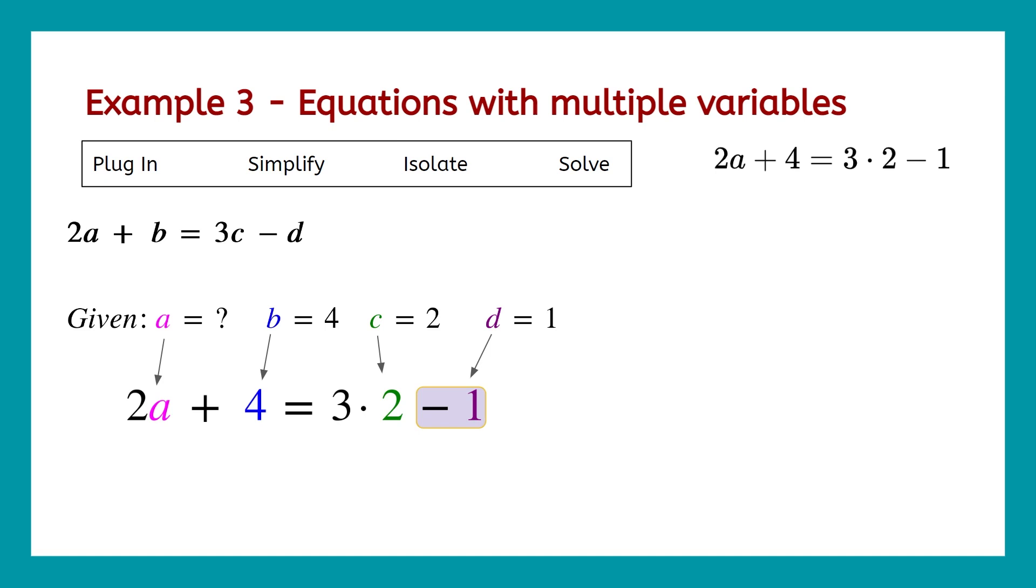So we get 2a plus 4 equals 3 times 2 minus 1. And now we start to simplify. 3 times 2 is 6, minus 1 is 5. So we get 2a plus 4 equals 5. So now we've plugged things in, and we've simplified them. Next we got to isolate. How are we going to isolate this? Two things are happening there. We're adding 4, and we're multiplying by 2. We want to get rid of the thing that's being added or subtracted first. So I'm going to get rid of the 4. It's being added right now, so I have to subtract it. That means when I subtract 4 from both sides, I'll get 2a equals 1. Now, how do I get a by itself? a is currently being multiplied by 2, so I need to divide both sides by 2. So I get a equals 1 half. And now I can go ahead and reduce that to a decimal, which would be 0.5.